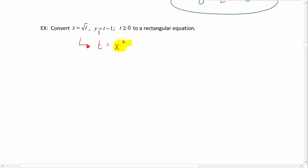We're now going to take this x squared and plug it into our y equation for t. We get y to be equal to x squared minus 1.